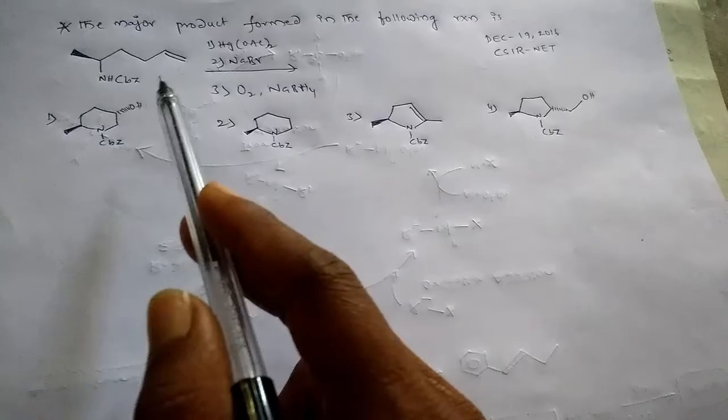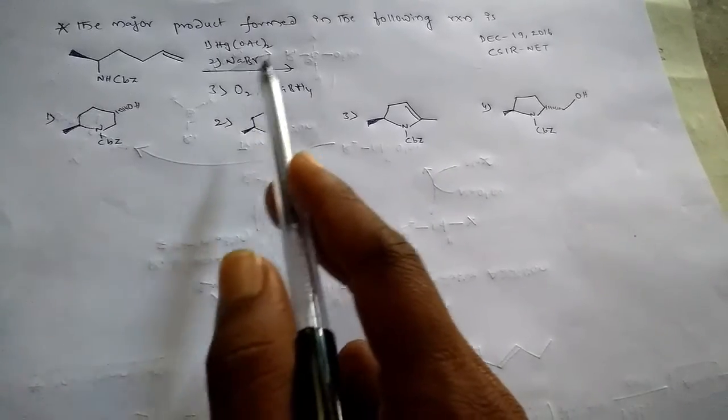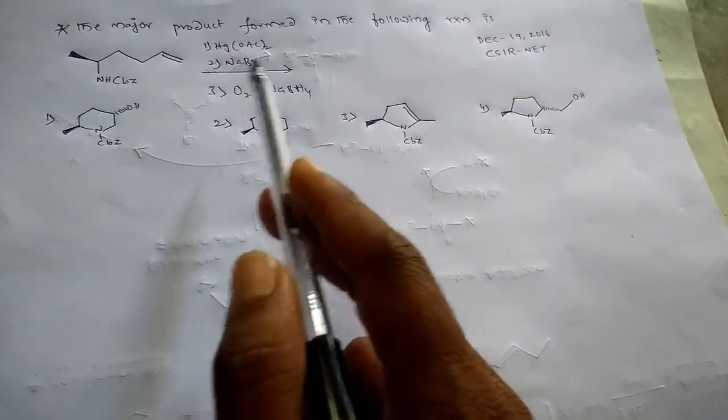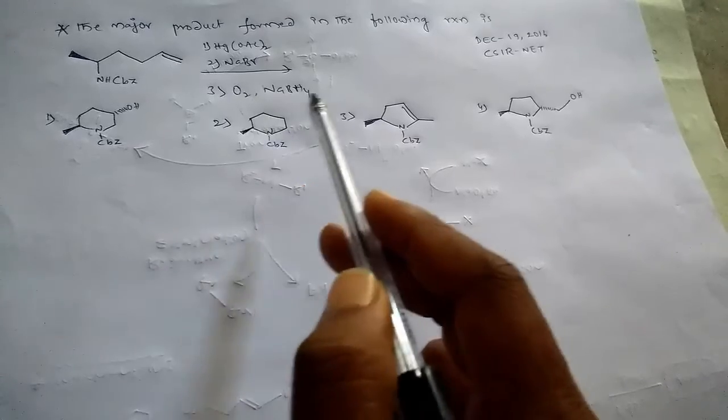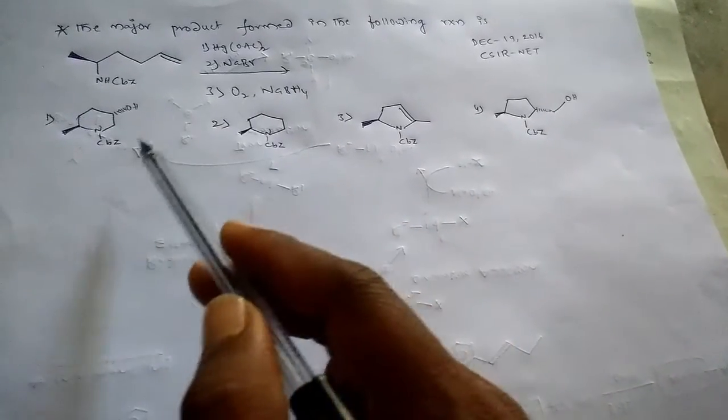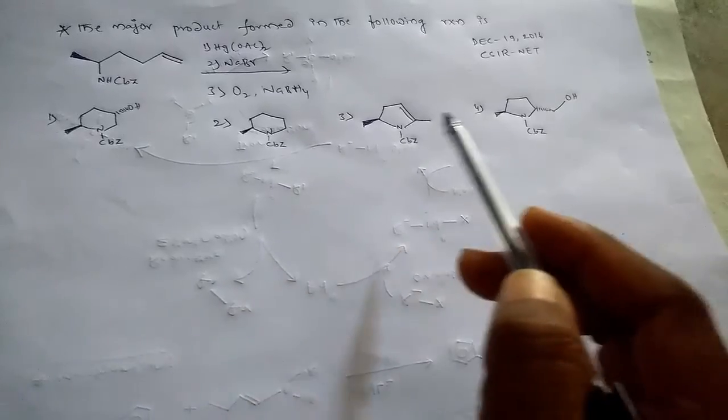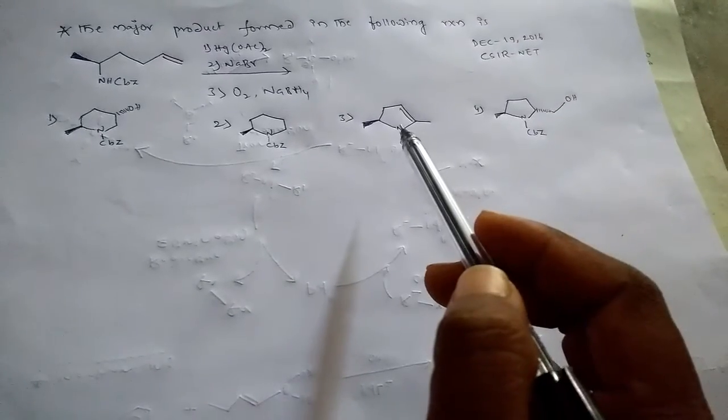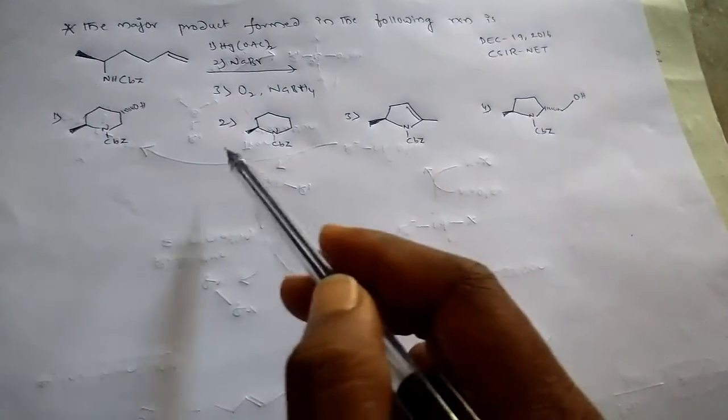Okay, we have the reactant here. So, mercuric acetate and sodium bromide and molecular oxygen and sodium borohydride. On these conditions, what will be the choice of these four? Okay, and what will be the right answer.